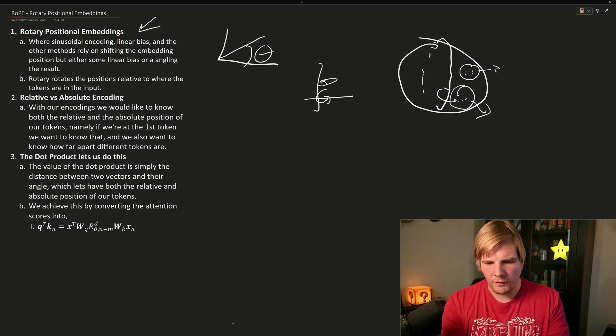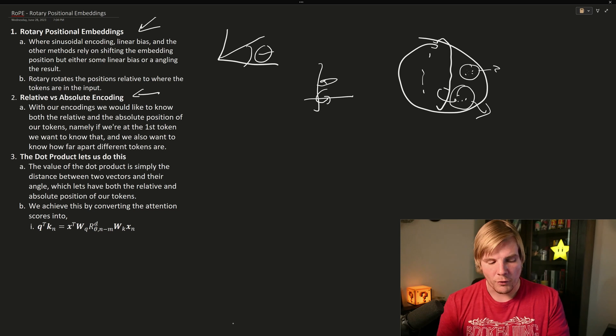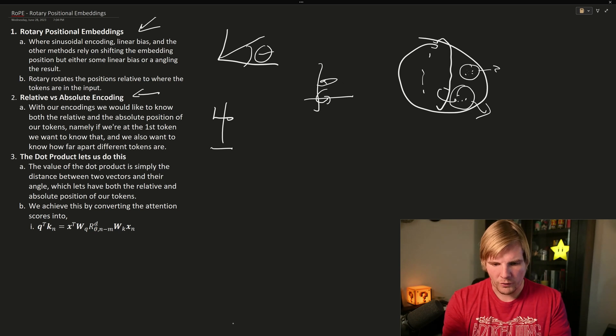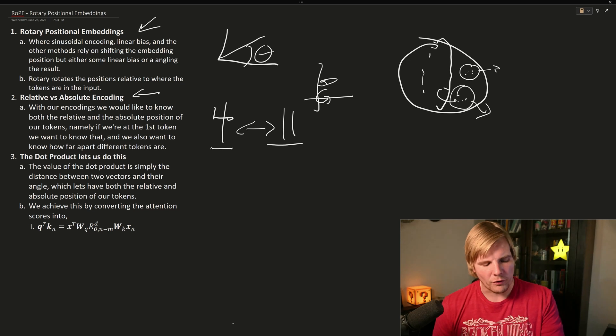And why we care about this is because of relative versus absolute encoding. So we don't want to only know are we at the fourth token, we also want to know how far apart are the fourth and eleventh tokens. And why this is important is this should, in theory, give our model the ability to extrapolate into higher token counts. But this doesn't seem to be the case. And when we get into Superhot, we'll see why.